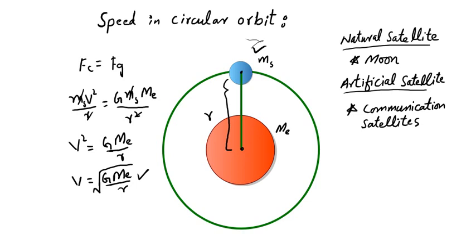If we have specific values and want to calculate the total distance R, we note that R is the height from the Earth's surface to the satellite (h) plus the radius of the Earth (Re). So we can rewrite the equation using these components.